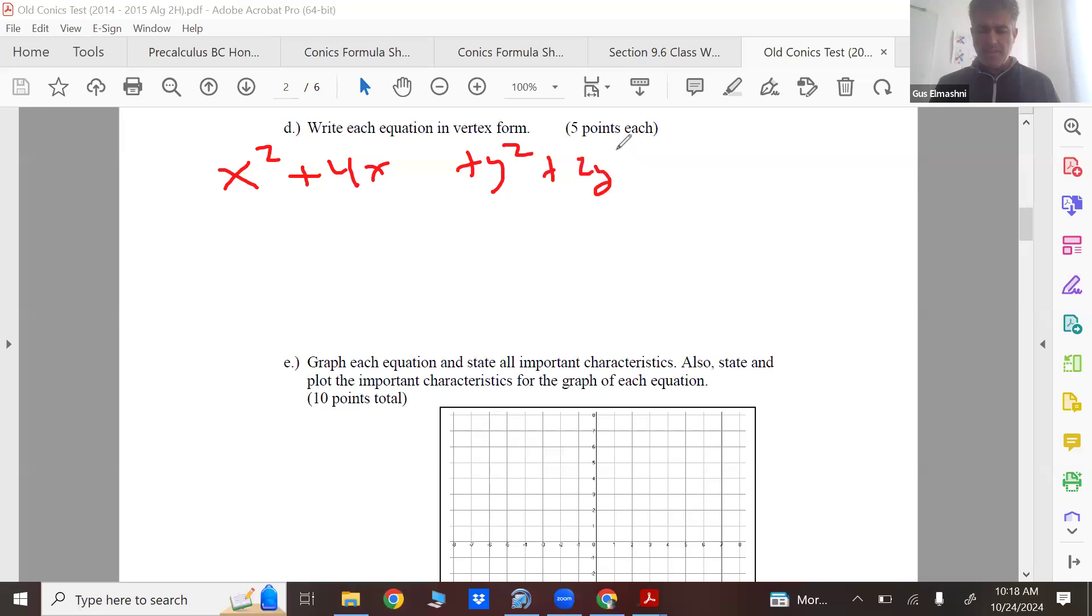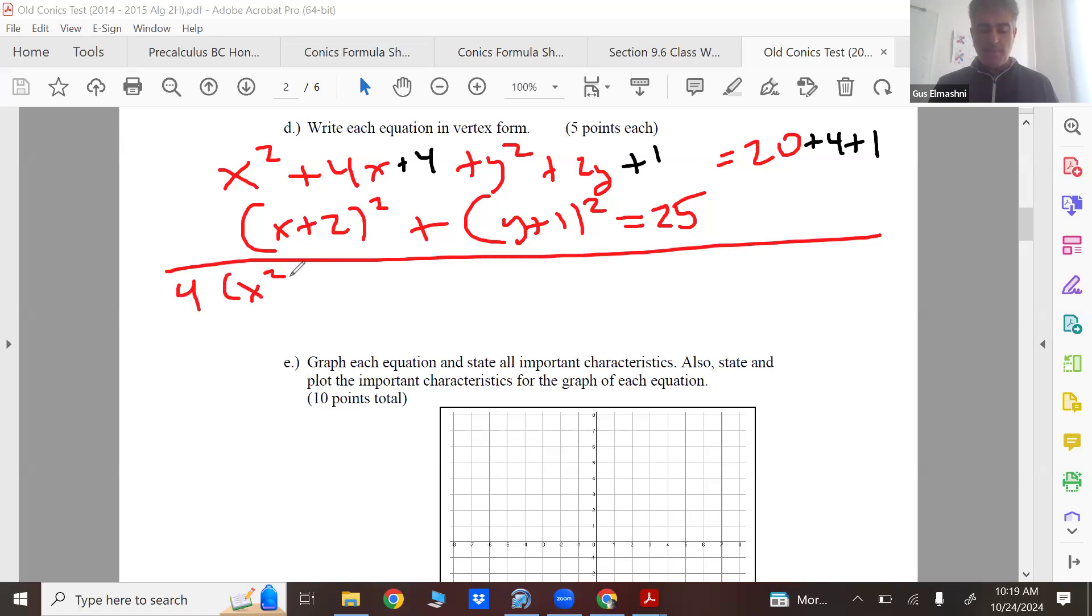Let's rearrange like this. Plus two y. Okay what's half of four then squared? Four. What's half of two squared? One. How about the other one? I'm gonna pull the four out, and the other one's just y squared plus two y and the other side is 11.